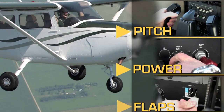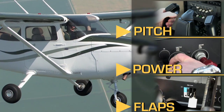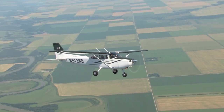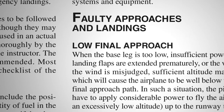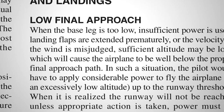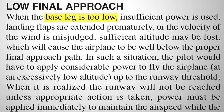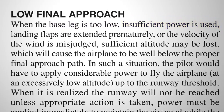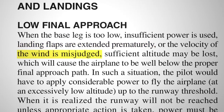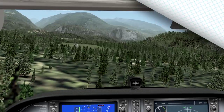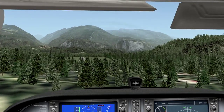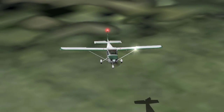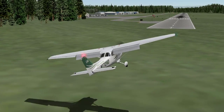With this in mind, let's analyze some of the situations a pilot will face relating to energy management. The Airplane Flying Handbook mentions a number of reasons why the pilot could be positioned well below the proper final approach path: base leg too low, insufficient power, landing flaps extended early, misjudged wind. Loss of obstruction clearance and the inability to make the runway are two major hazards of flying too low of an approach. If a pilot attempts to recover from the situation incorrectly, it could also result in a low altitude stall.